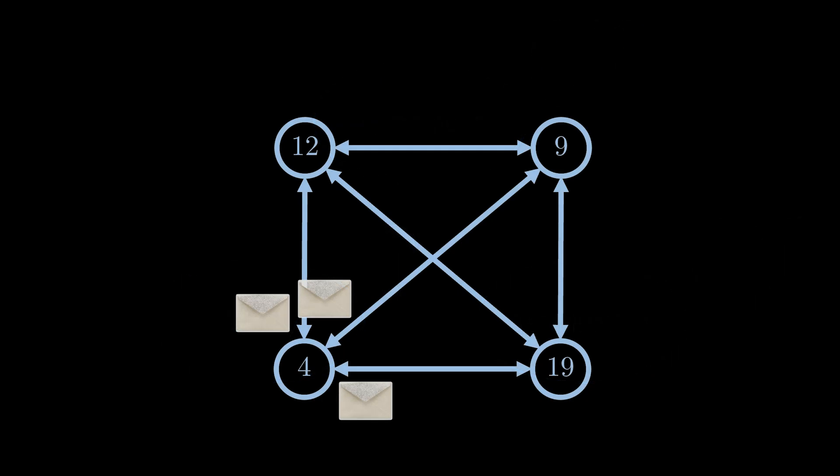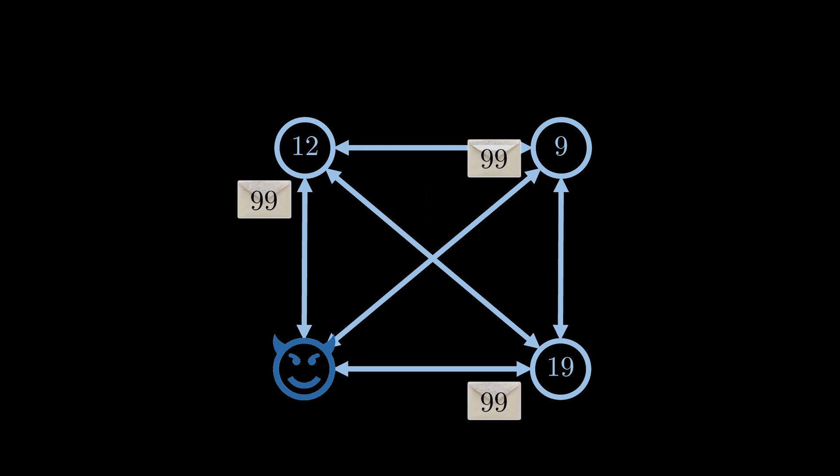Validity says that the nodes must agree on an input value. However, what if a Byzantine node ignores its input value and sends an arbitrary value to other nodes instead? If this value is accepted by all nodes, the nodes do not agree on an input value as desired.